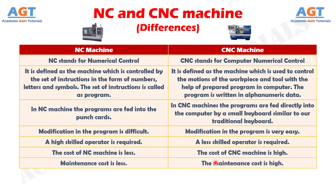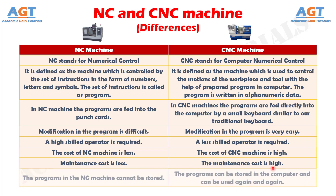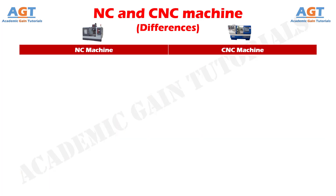Number 7. In NC machine, maintenance cost is less, whereas in CNC machine, the maintenance cost is high. Number 8. The programs in the NC machine cannot be stored, whereas in CNC machines, the programs can be stored in the computer and can be used again and again.